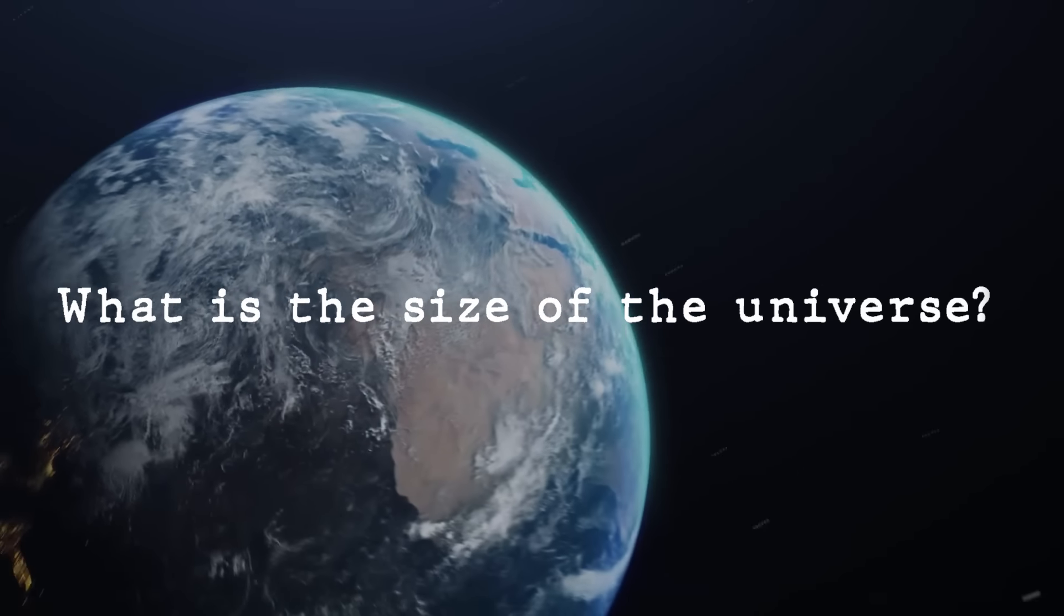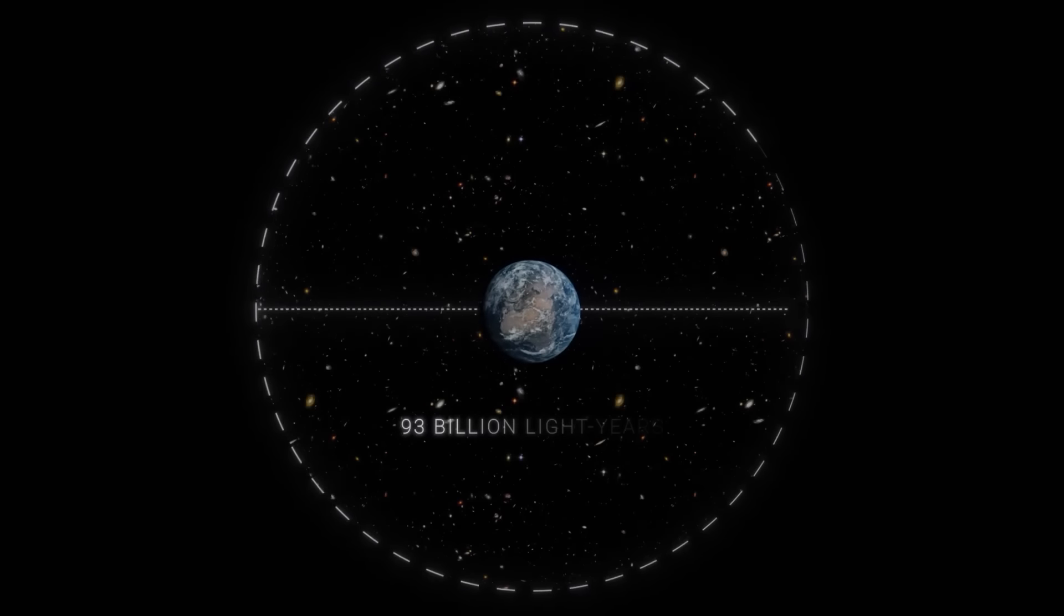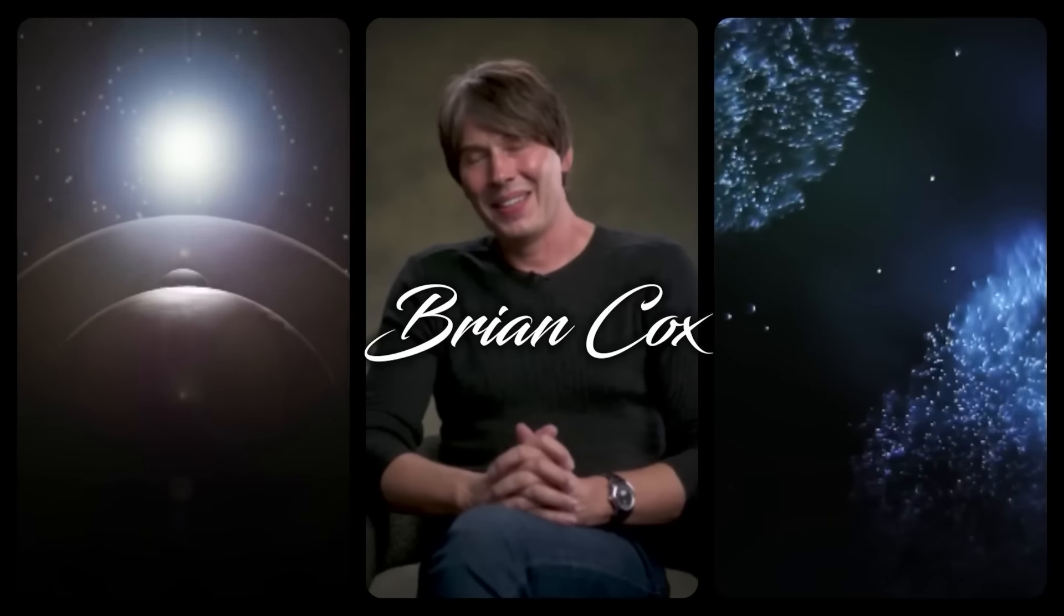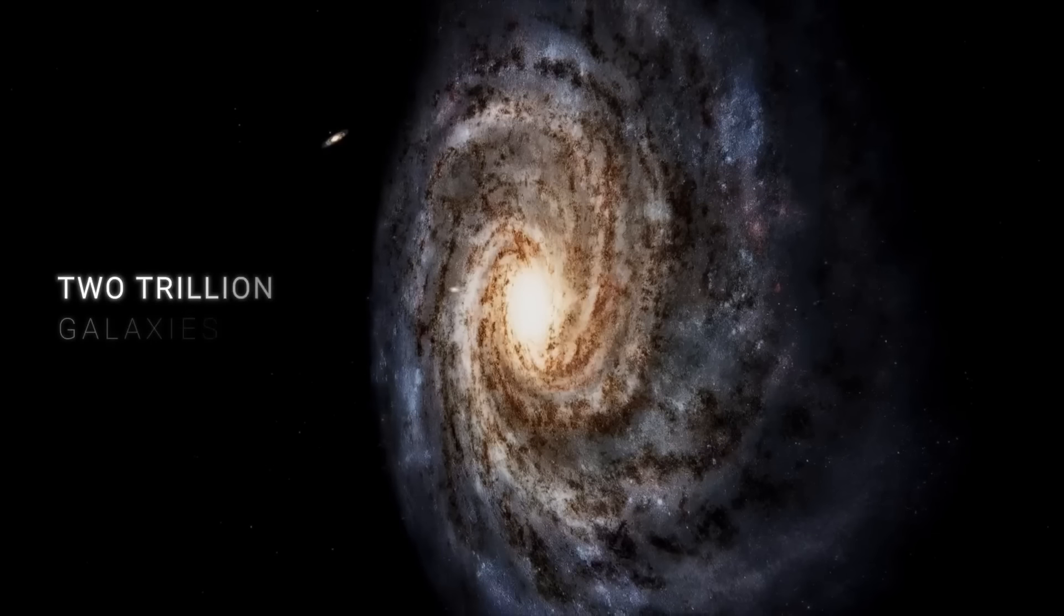What is the size of the universe? The estimated diameter of the observable universe is approximately 93 billion light-years. According to famous British physicist Brian Cox, within this vast expanse, there are as many as two trillion galaxies.